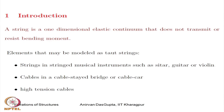So, where do we find strings? Elements that may be modeled as taut strings are found in stringed musical instruments such as sitar, guitar, violin, and even in the piano. Then in the cables in a cable-stayed bridge or a cable car — these structures have cables which are under tremendous amount of tension and hence they can be analyzed as strings. High-tension cables, which are again under very high tension, may also be treated as taut strings.